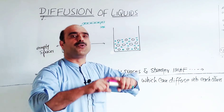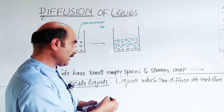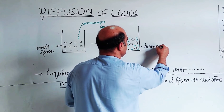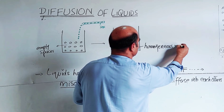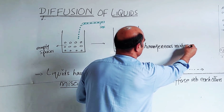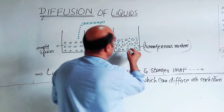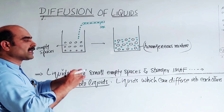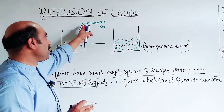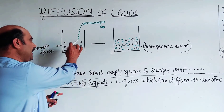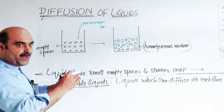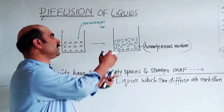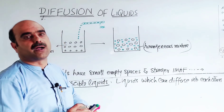A mixture having uniform composition throughout is called a homogeneous mixture. So it is clear that liquid molecules mix randomly with other liquid molecules through collision, and at the end a homogeneous mixture is formed. This process is called diffusion.